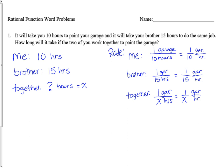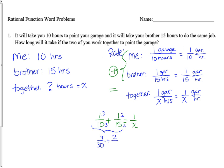If we work together, we add our individual rates to see what we get total. So one tenth plus one fifteenth has to equal one over x, because that's how much of the garage we paint each hour. To solve this I need a common denominator. The least common denominator between 10 and 15 is 30, so one tenth becomes three thirtieths and one fifteenth becomes two thirtieths. Three thirtieths plus two thirtieths is five thirtieths, which reduces to one sixth. So if one sixth equals one over x, then x equals six hours to paint the garage together.